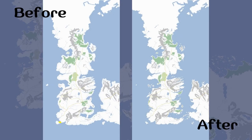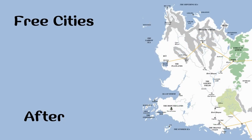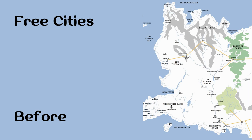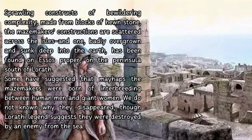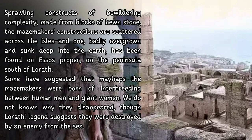Westeros is pretty much covered — the Riverlands and areas close to the sea are mentioned in the North, Vale, and Crownlands maps, but there isn't much of a coastline there, so we're moving to Essos. The area where the free cities are located changed only a little I think. The arm of course sank, Braavos was one unified part since it's described very similar to the Netherlands — various small islands connected with bridges over canals. The Lorathi Isles were also part of mainland Essos. Sprawling constructs of bewildering complexity made from blocks of hewn stone, the magemakers' constructions are scattered across the isles, and one badly overgrown and sunk deep into the earth has been found on Essos proper, on the peninsula south of Lorath — so the whole area was one.